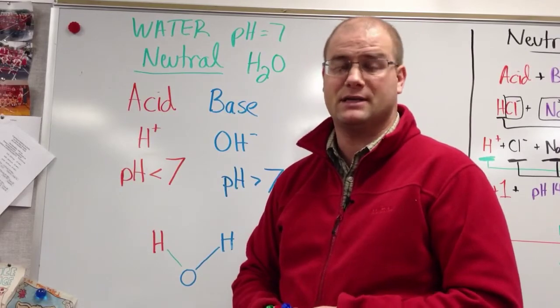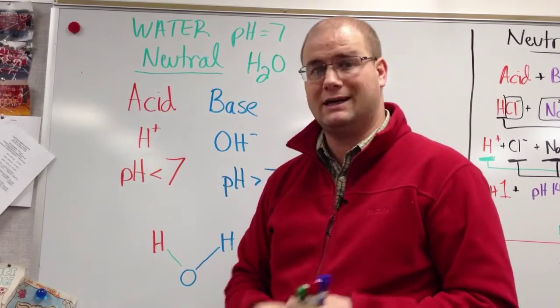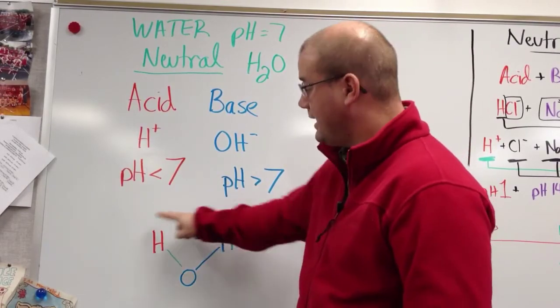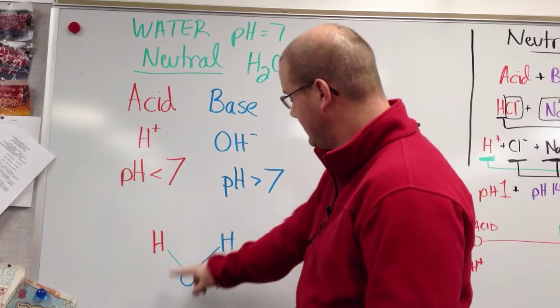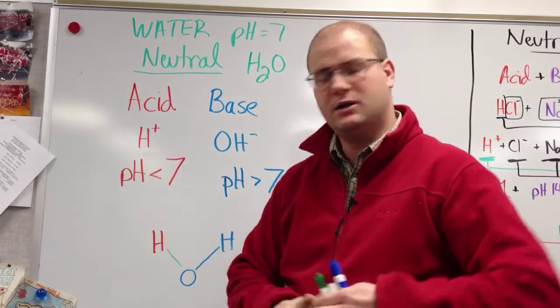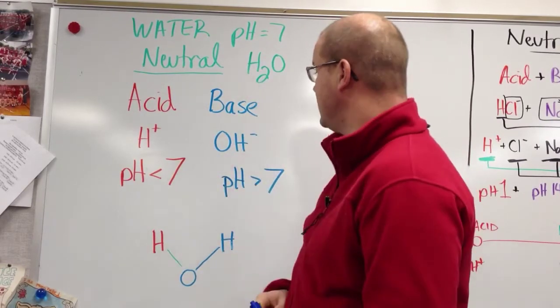Now pH of exactly 7 means that it's neutral. It's not an acid, it's not a base. Actually, you can see why. It's half acid and half base. And they've combined and they totally neutralize each other. So neutral means right in the middle. That's going to be a pH of 7.